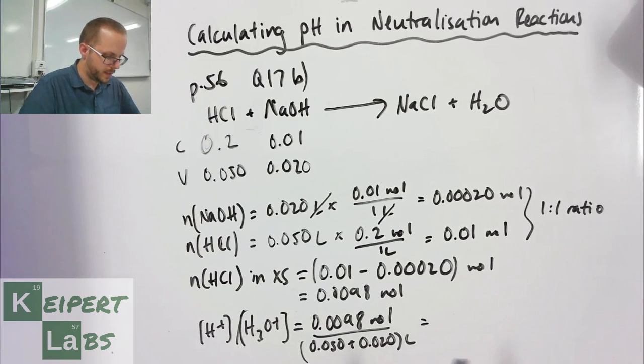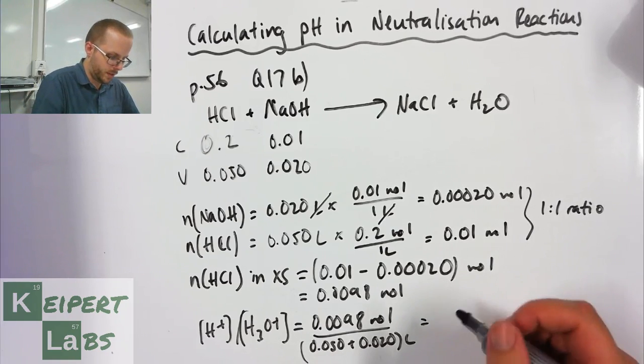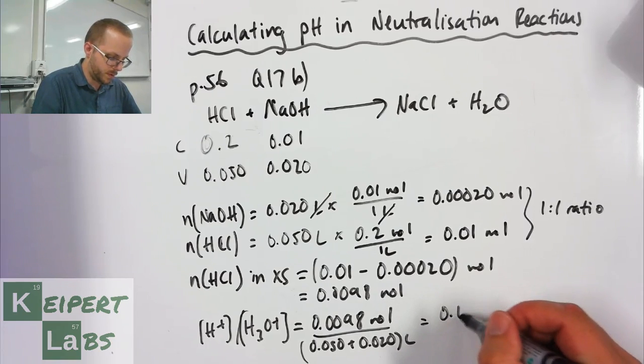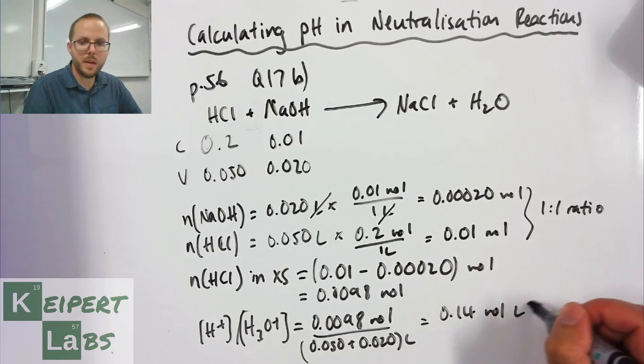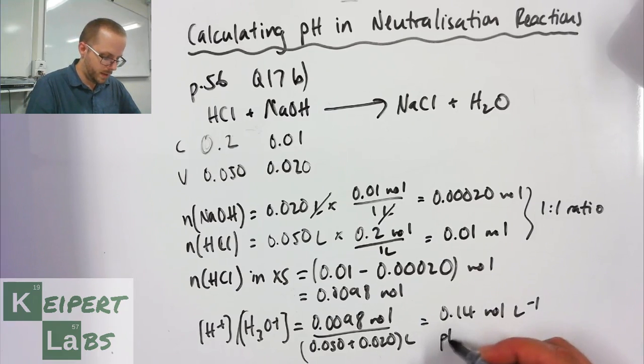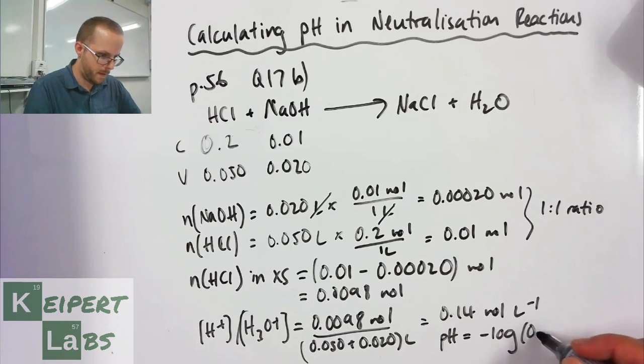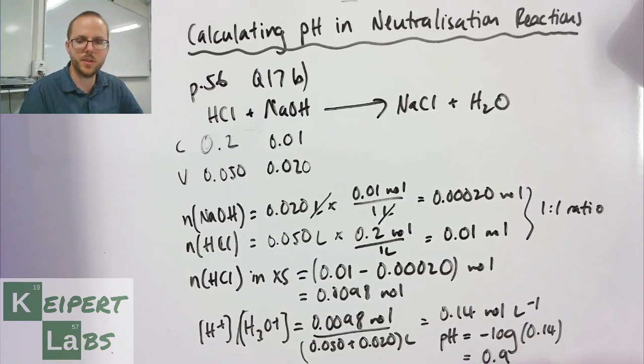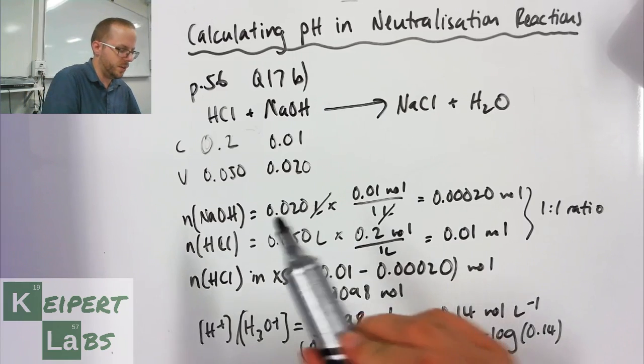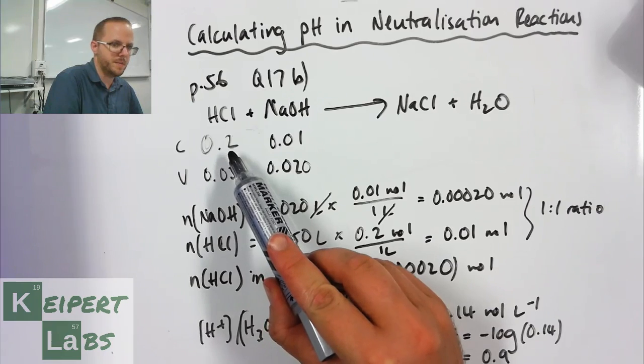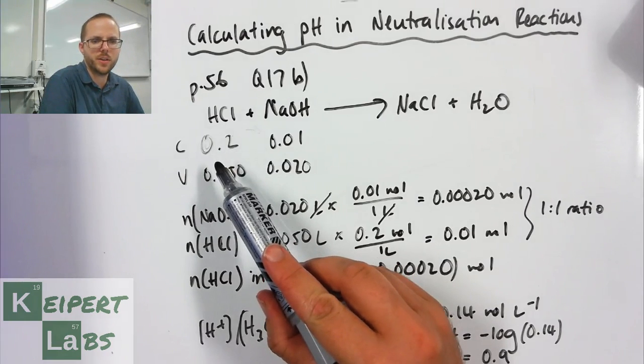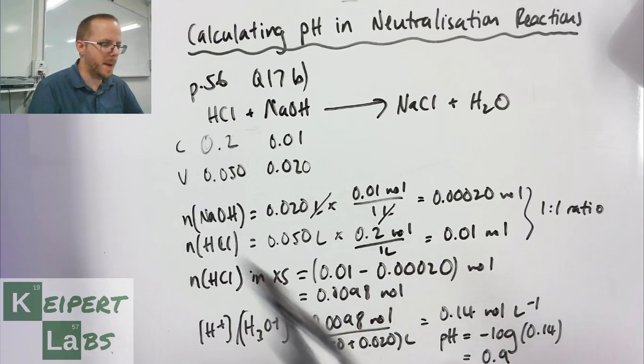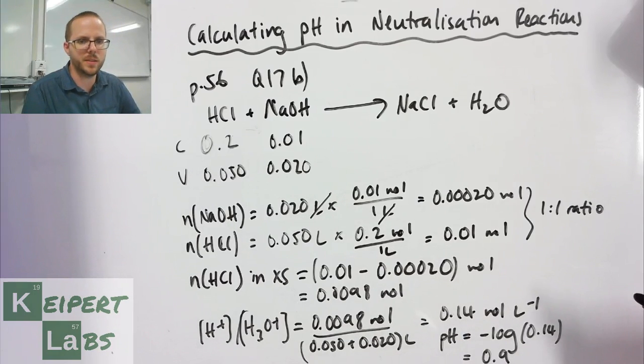We've got 0.14 moles per litre, and so then our pH, we can put this into our pH formula and so we get a value to one significant figure of pH 0.9. The reason I picked one significant figure is that in the question we're given one significant figure in this value of our acid concentration, so that's the maximum number we can report our final answer to.